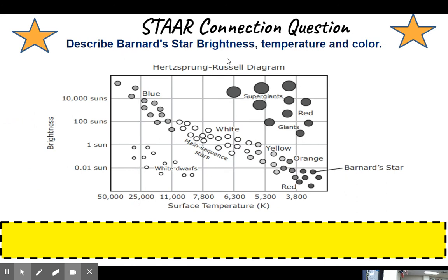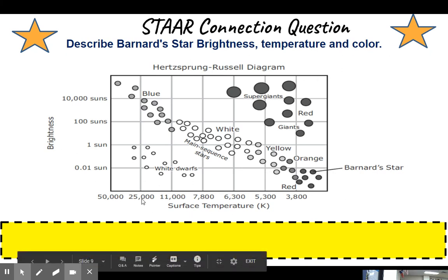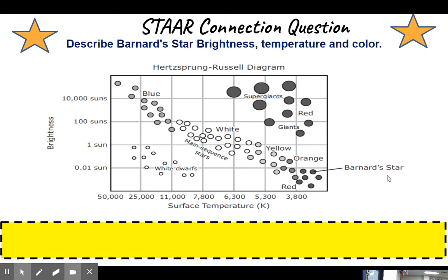Star connection question. Describe Barnard's star brightness, temperature, and color. So here's temperature, here's brightness, and we're looking at Barnard's star. So we have to describe this star based on its brightness. So brightness increases from bottom to top. So you can see that Barnard's star is a dim star. It's not very bright. It's much less than our sun at 1. So we can describe it as being dim, not bright. How about its temperature? So our temperature, it's going to be less than 3,800 Kelvin because it's in this square. So I can say it's a cool star, less than 3,800. And what about its color? Well, it's labeled as a red. So I would say Barnard's star is a red star. It's a cool star because its temperature is less than 3,800 and it's not a very bright star.